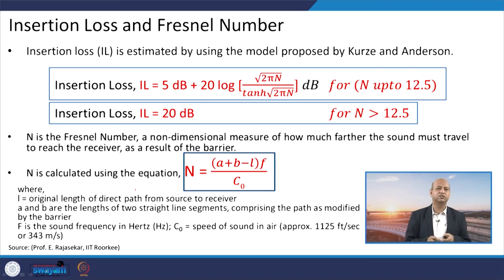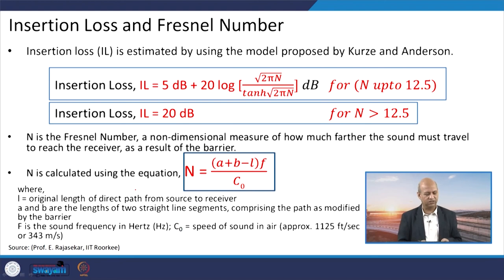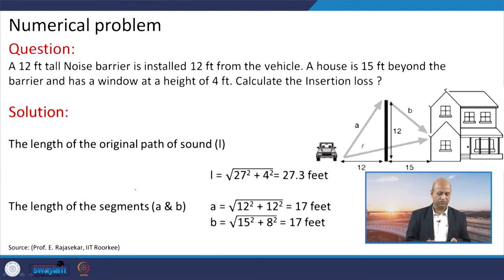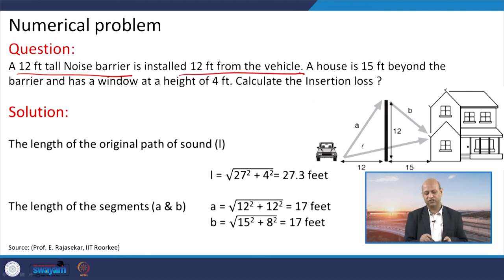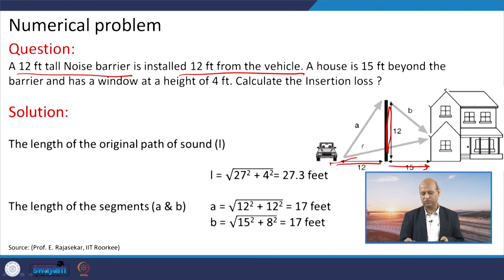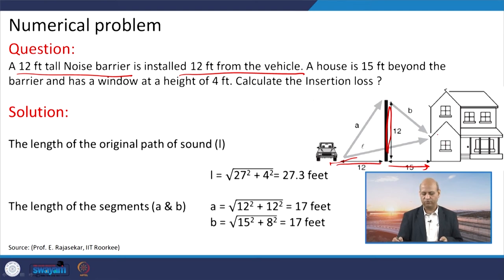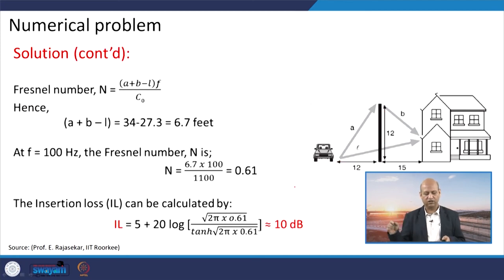Noise barrier losses are of two types: transmission losses due to distance, where sound loses energy, and insertion losses, which depend on the difference between the initial sound and the sound reaching the receptor because of the barrier's presence. These losses sum up to give a net result of reduced sound. A simple empirical formulation can be used to calculate insertion losses. For example: a 12-foot-tall noise barrier installed 12 feet from the vehicle and 15 feet from the house — with a window of 4-foot height — can be used to calculate the total path length and resulting energy losses.